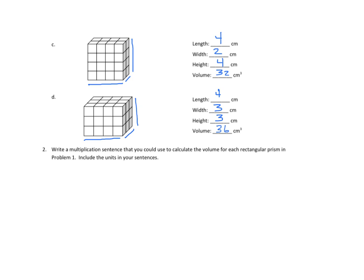In the next part, they tell us to write a multiplication sentence that you could use to calculate the volume for each rectangular prism in problem one. Well, let's do C. So I have four centimeters times two centimeters times four centimeters. And I can simplify. I know that four times two is eight. And I multiply eight times four. And I get 32. And that's 32 centimeters cubed. Why is it cubed? Well, I'm not just multiplying the numbers. I'm multiplying centimeters times centimeters times centimeters. And if I multiply that, I can use the exponent. Centimeters cubed or centimeters to the third. Because, again, part of the calculation is not just the numbers. It's also the units of measure.